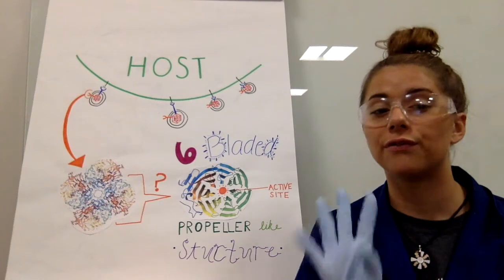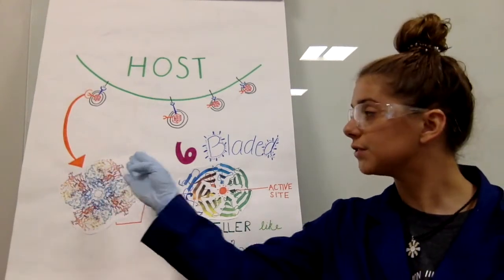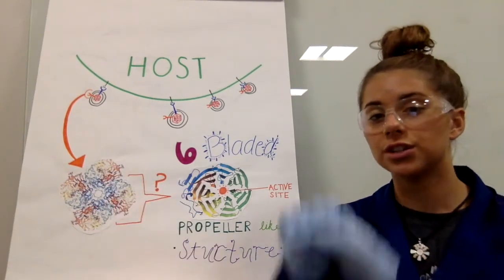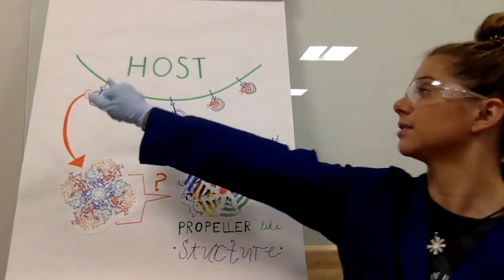Neuraminidase is composed of four identical, roughly spherical subunits arranged in a square, connected to the virus through a long protein stalk.